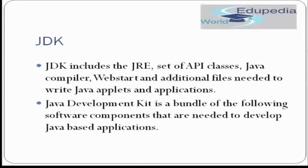JDK includes the JRE, a set of API classes, the Java compiler, web chart, and additional files needed to write Java applets and applications. The purpose of JDK is to develop pure Java code. When you develop your Java code, JDK internally includes JRE — the Java Runtime Environment — as well as API classes, the Java compiler, and other additional features for writing and developing your application.